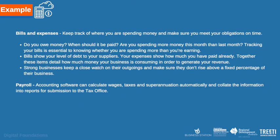Bills and Expenses: Keep track of where you are spending money and make sure you meet your obligations on time. Do you owe money? When should it be paid? Are you spending more this month than last month? Tracking your bills is essential to knowing whether you are spending more than you are earning. Bills show your level of debt to suppliers and your expenses show how much you have already paid. Together, these items detail how much money your business is consuming to generate revenue. Strong businesses keep a close watch on outgoings and ensure they don't rise above a fixed percentage. Payroll: Accounting software can calculate wages, taxes and superannuation automatically and collate the information into reports for submission to the tax office.